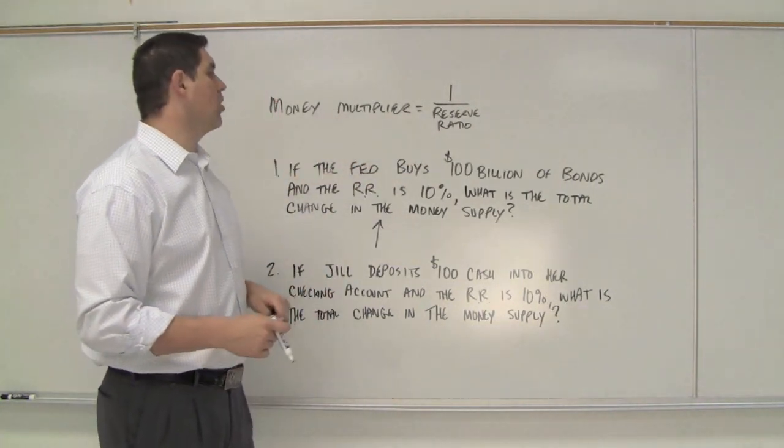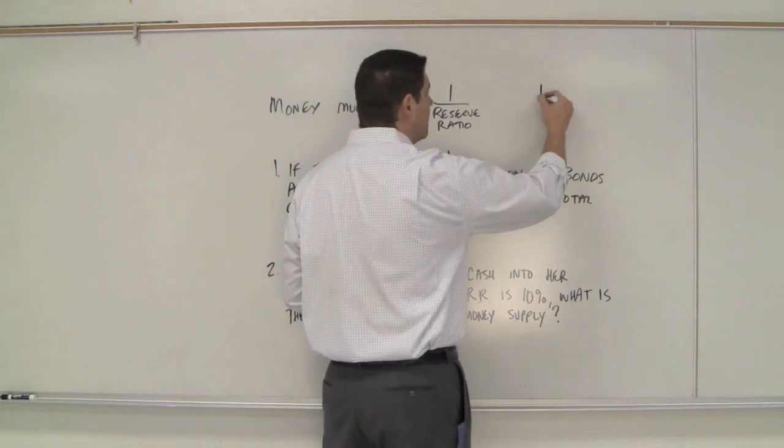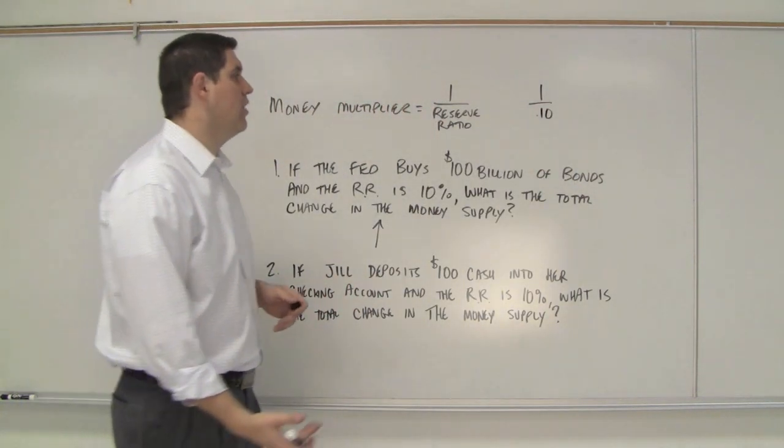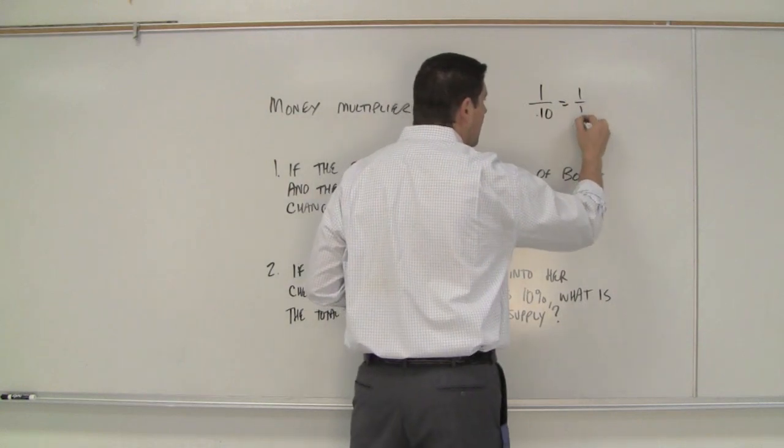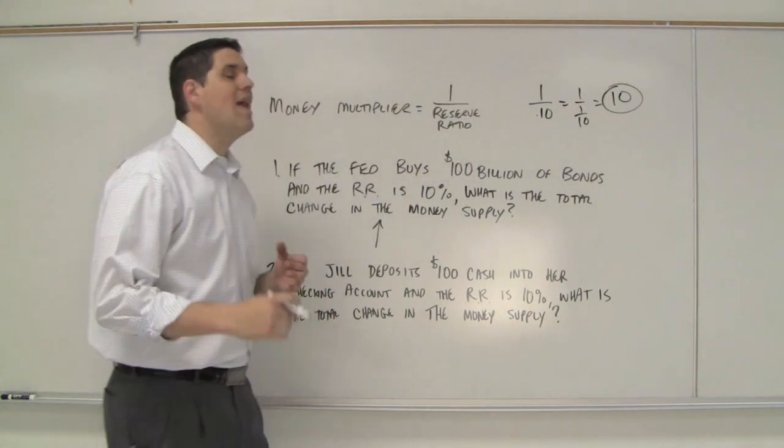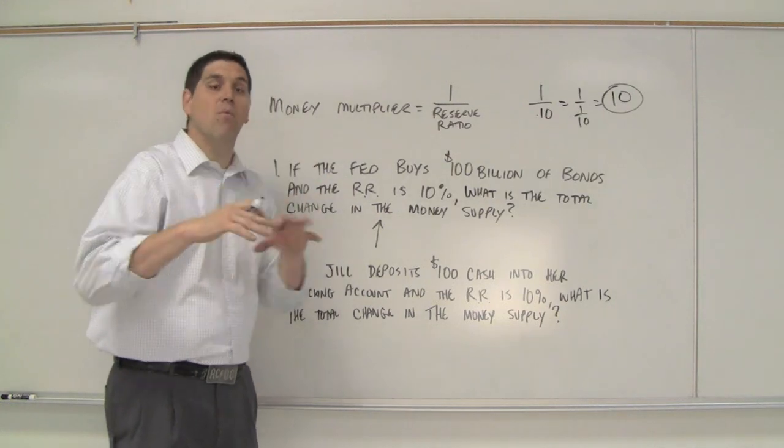First, we have to calculate the money multiplier. It's 1 over 0.1 or 1 over 1 tenth. Equals 10. The money multiplier is going to be 10.